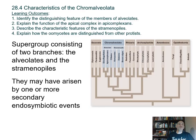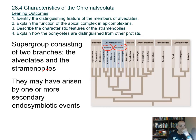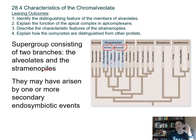Looking at the three major kinetoplastid diseases — African sleeping sickness, Chagas disease, and leishmaniasis — they seem to have some common genes. That provides a target for research on how those common genes might allow development of drugs to treat these diseases. Now we'll look at the supergroup Chromalveolata, which has many subgroups broken up into two major clades: the alveolates and the stramenopiles.